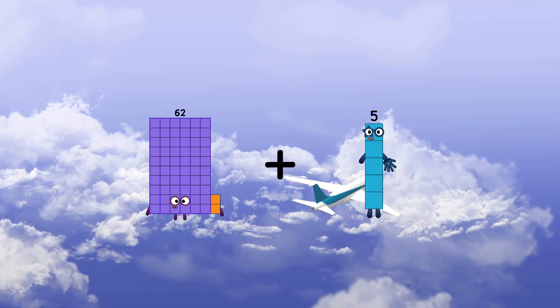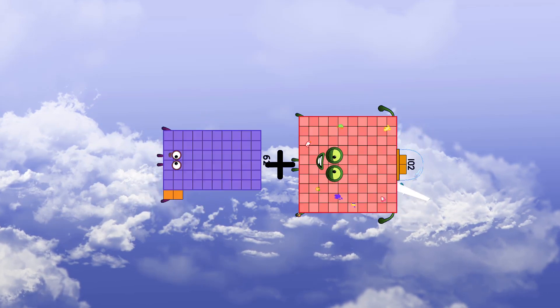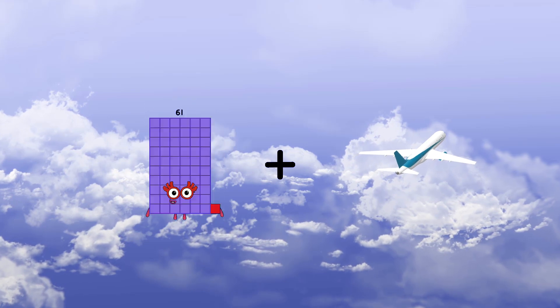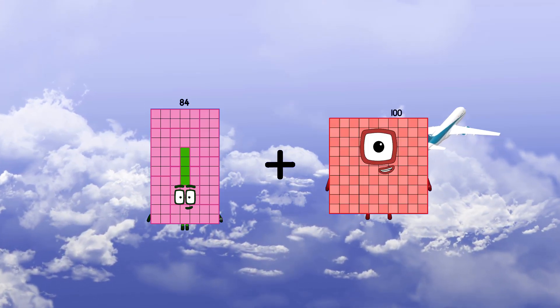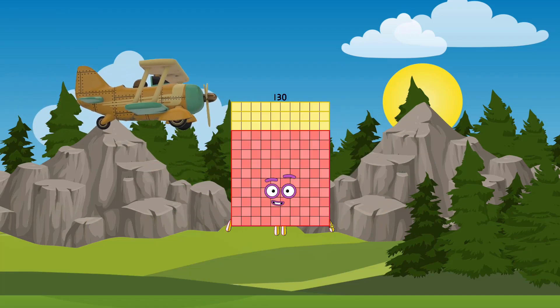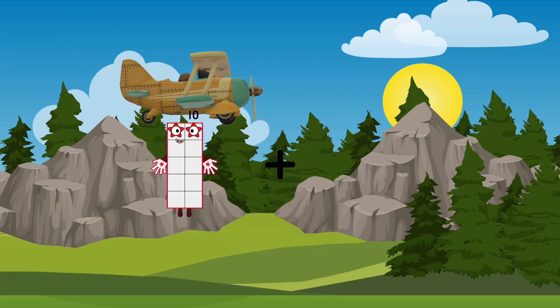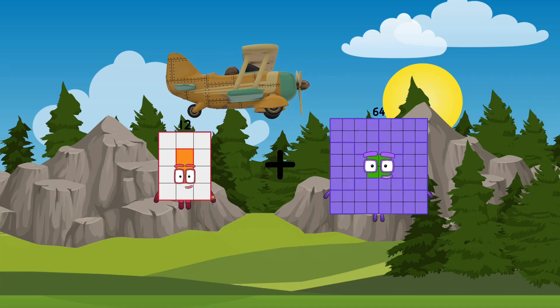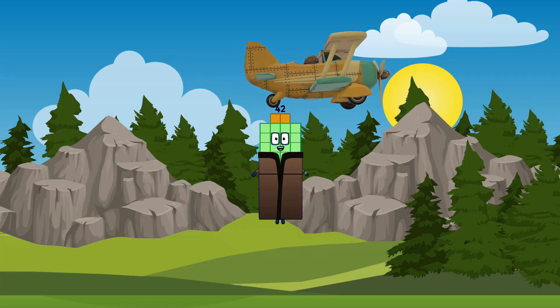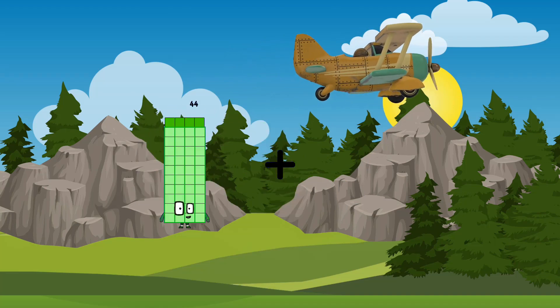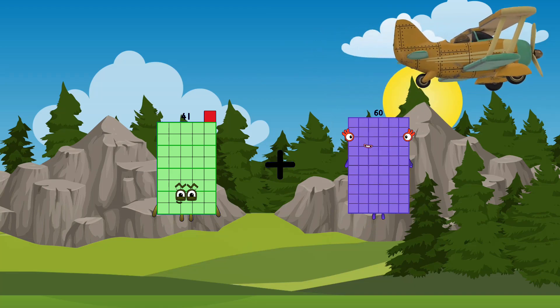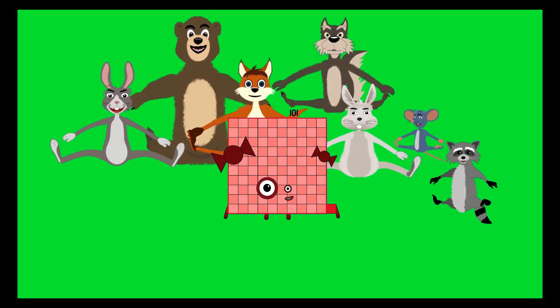62 plus 102 equals 164. 84 plus 46 equals 130. 12 plus 30 equals 42. 41 plus 60 equals 101.